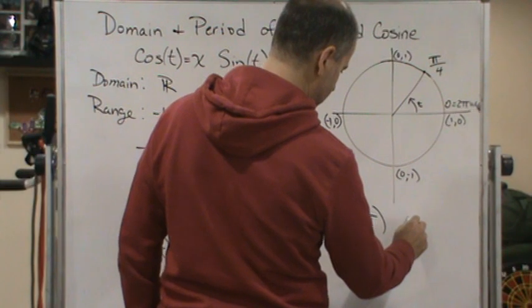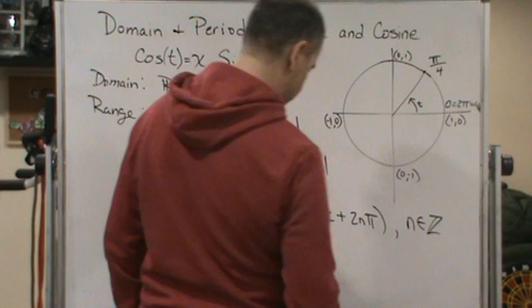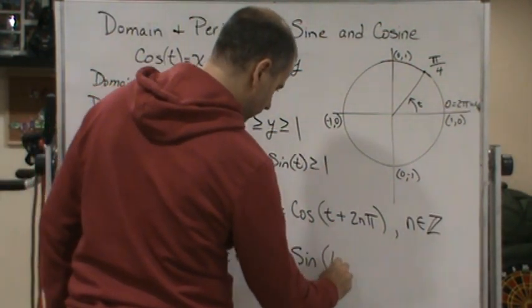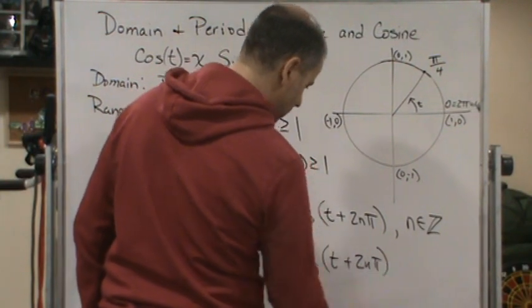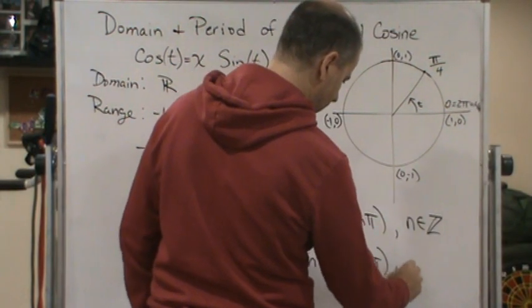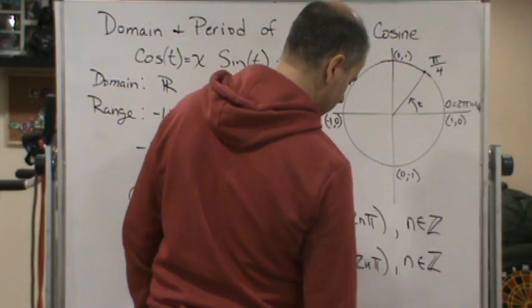So, n is an integer, okay? And then sine t plus 2nπ, right? So, any multiple of 2π, where, again, n is an integer.